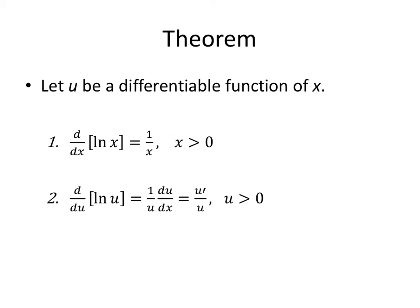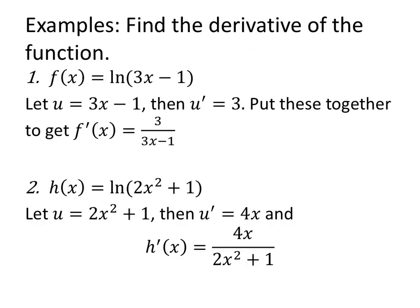Let U be a differentiable function of X. The derivative of the natural log of X is 1 over X. Looking at that definition and the second fundamental theorem of calculus, it totally makes sense that the derivative of the integral from 1 to X of 1 over T, DT, should be 1 over X. We can generalize: the derivative with respect to U of the natural log of U is 1 over U times DU/DX. I will frequently say: derivative of the inside divided by the inside. This applies for U values that are positive.